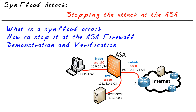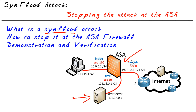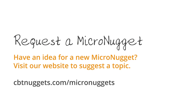In this micro nugget, we've taken a look at not only what a SYN flood attack is, but also why it's harmful to a server as it ties up all its resources. We also took a look at how to stop it by telling the ASA to set a threshold, and once that threshold is exceeded, to start doing TCP intercept. I hope this has been informative for you, and I'd like to thank you for viewing.